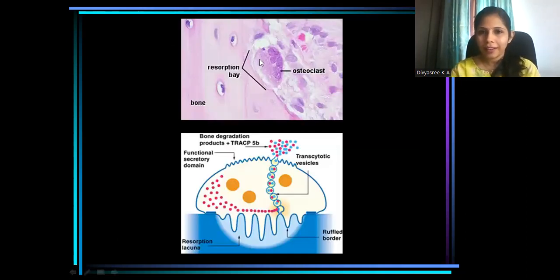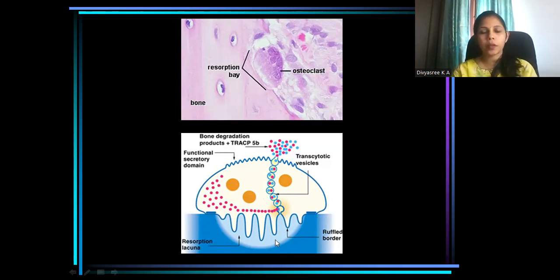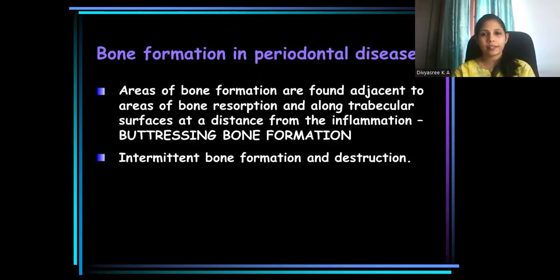This is an osteoclast occupying a resorption bay or a Howship's lacunae. It has got a ruffled border — osteoclast is a multinucleated cell. It has formed a ruffled border across this resorption bay through which it releases H+ ions, creating an acidic environment and releasing enzymes for bone destruction.